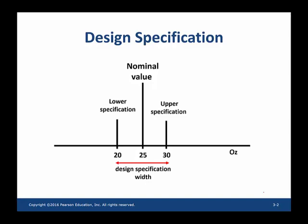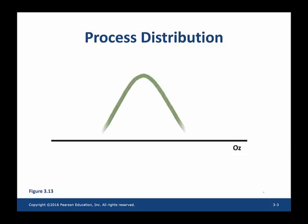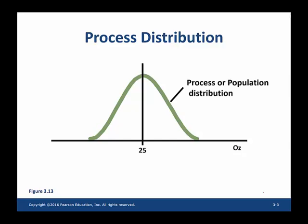Let us take a look at how my process is capable of producing 25-ounce water bottles. I collect data from process outputs — basically lots of water bottles — and I plot the weight of those water bottles and come up with the process distribution. Let us say the mean of this process distribution is 25 ounces. 32 ounces is three standard deviations to the right of the mean, and 18 ounces is three standard deviations to the left of the mean.